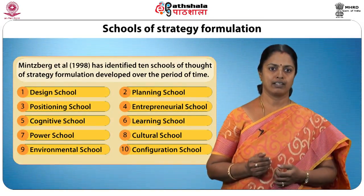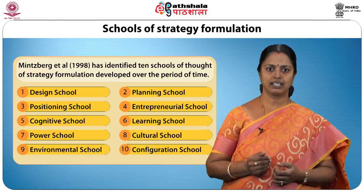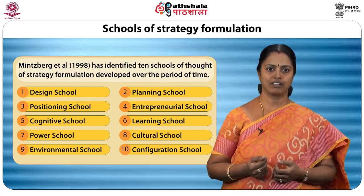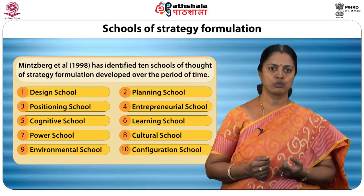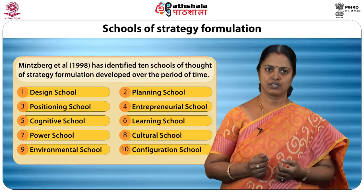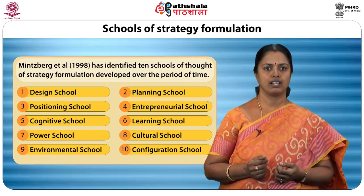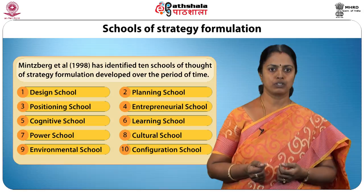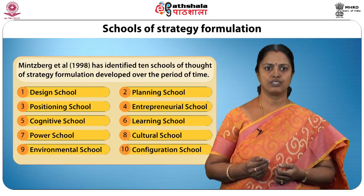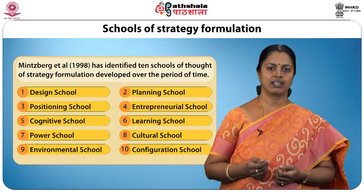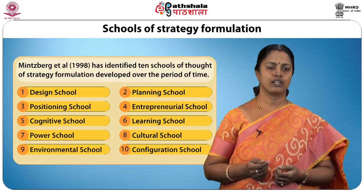There are several schools of thought regarding strategy formation. Mintzberg et al. identified 10 schools of thought in strategy formulation: the design school, planning school, positioning school, entrepreneurial school, cognitive school, learning school, power school, cultural school, environmental school, and configuration school. Two more schools were developed later: Warren in 2002 developed the dynamic strategy school, and Kim and Mauborgne developed the reconstructionist school in 2005.